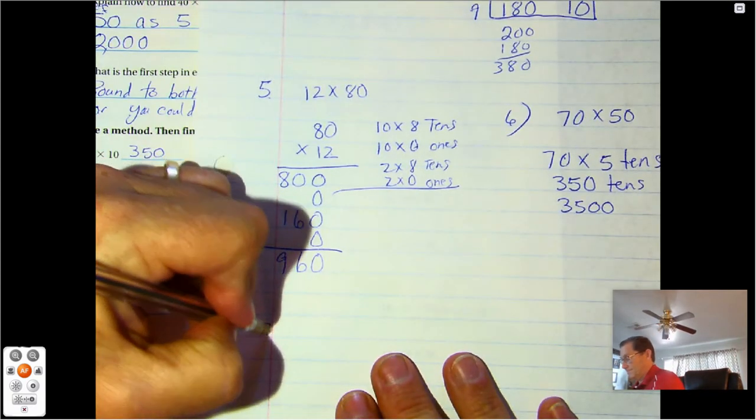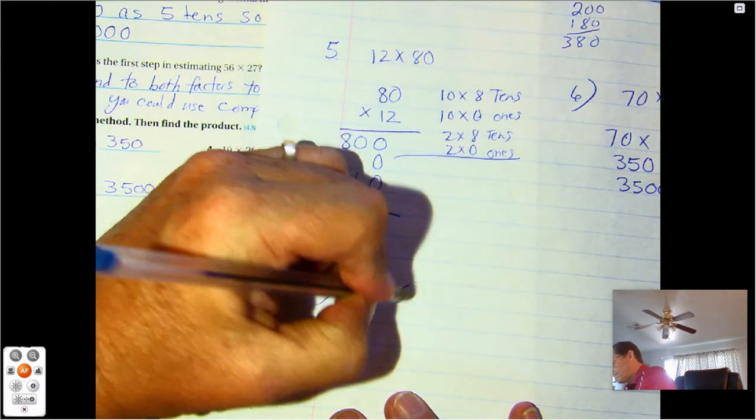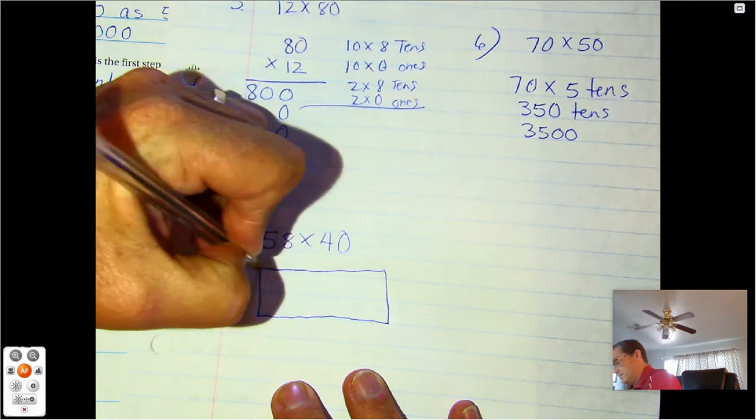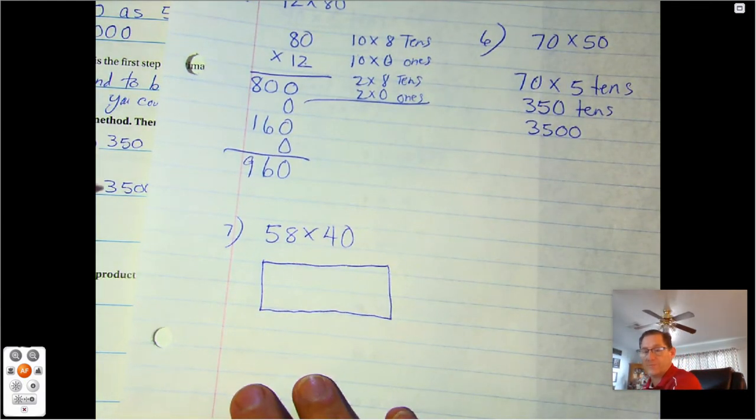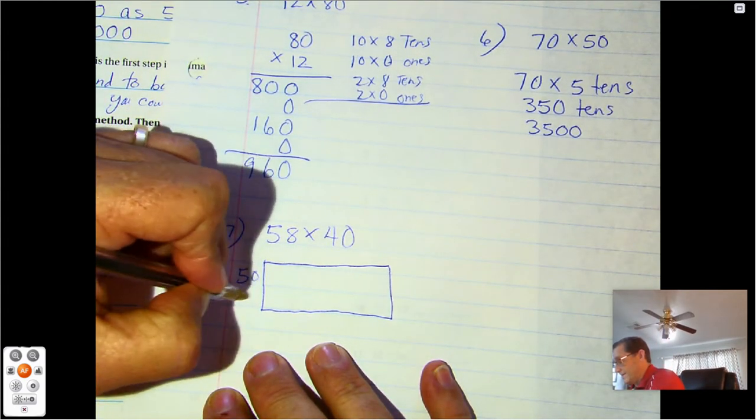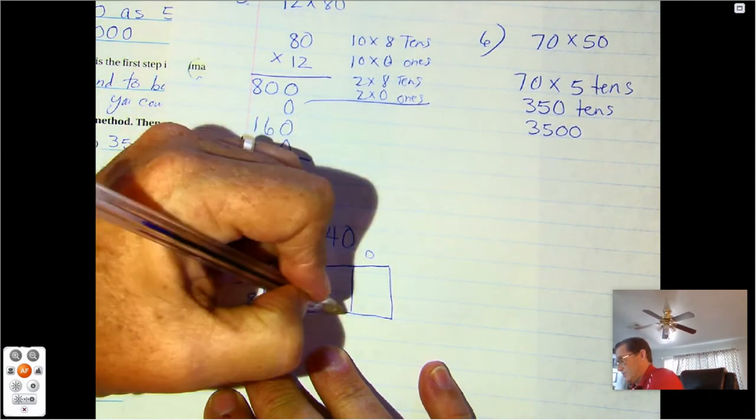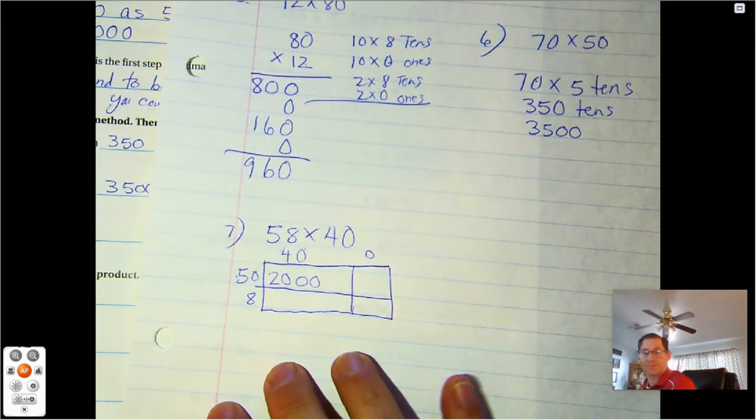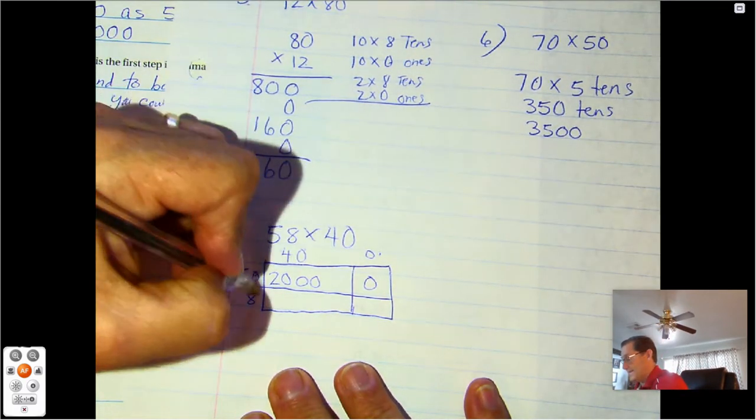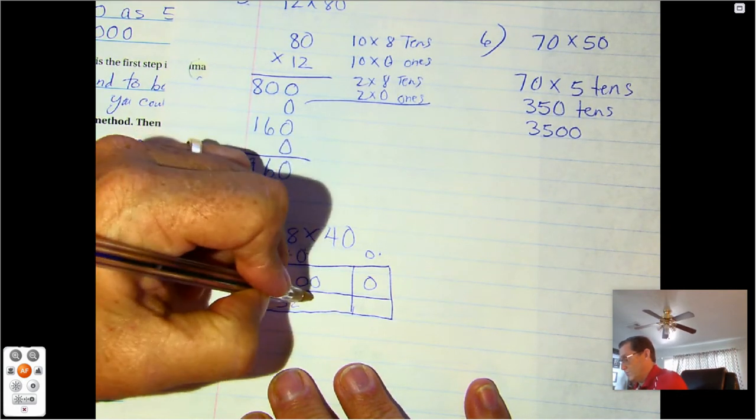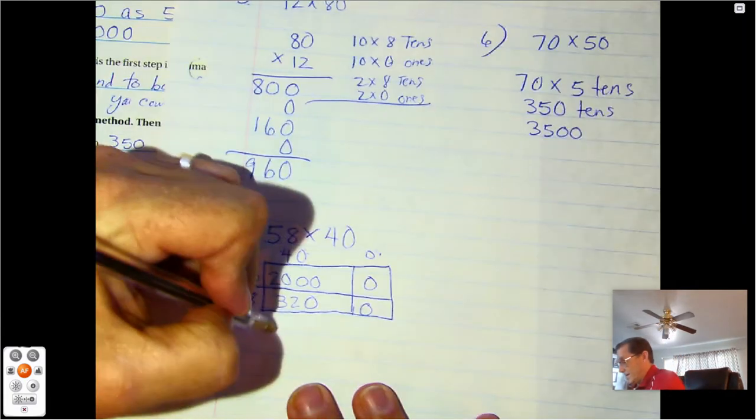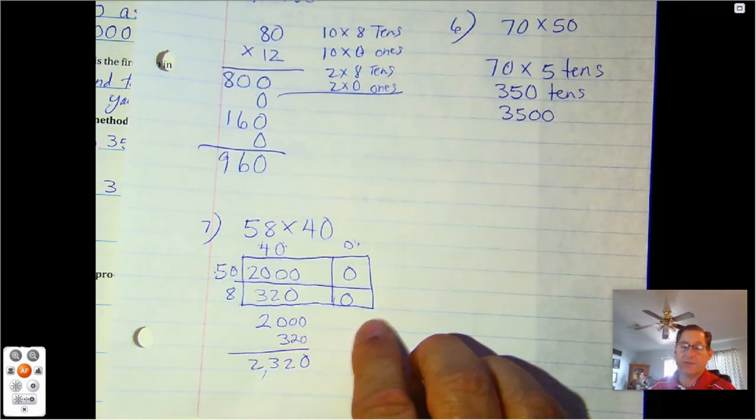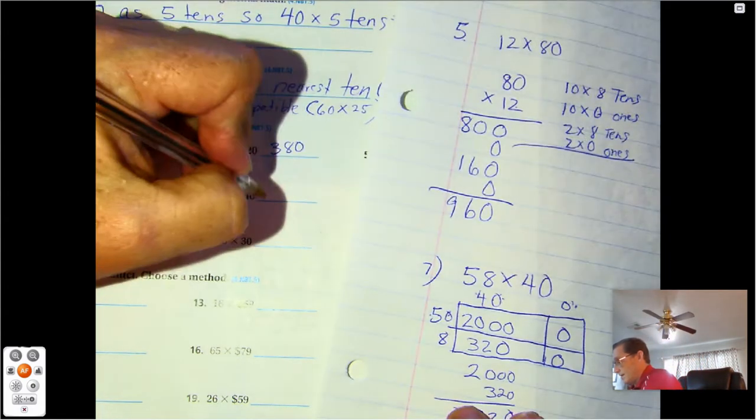Number seven. 58 times 40. I'm going to use the area model for partial products. Break up 58 as 50 plus 8, and 40 as 40 and 0. 50 times 40 is 2,000. 50 times 0 is 0. 8 times 40 is 320. 8 times 0 is 0. So 2,000 plus 320. Why am I only adding two numbers? Because two of the products are zeros. So 2,320.